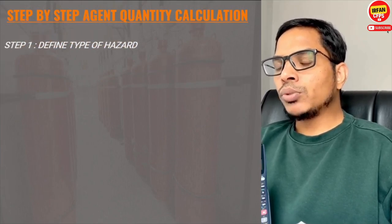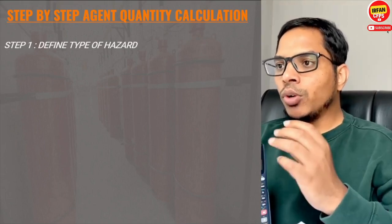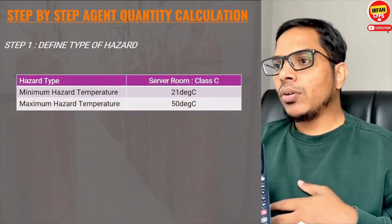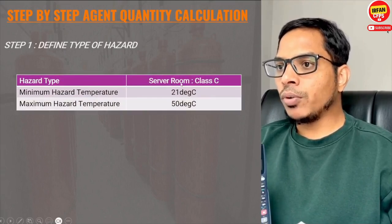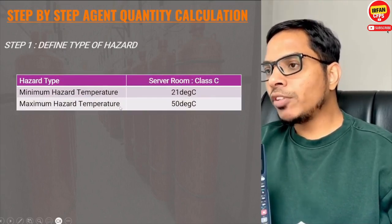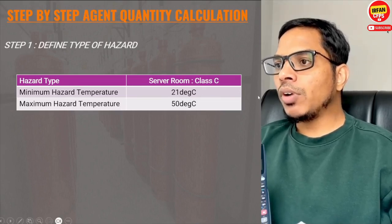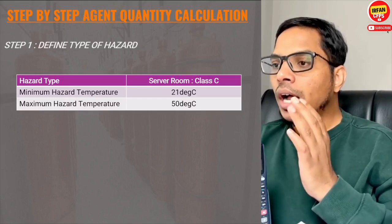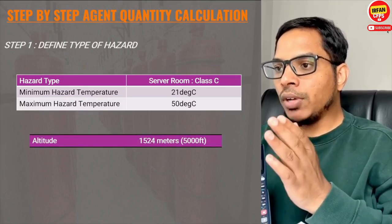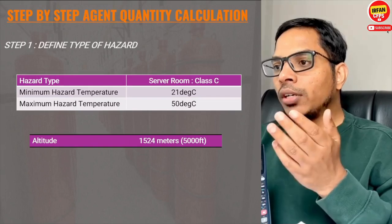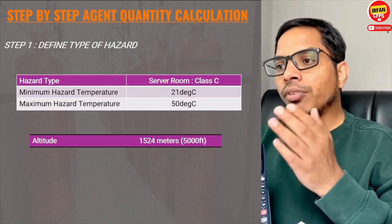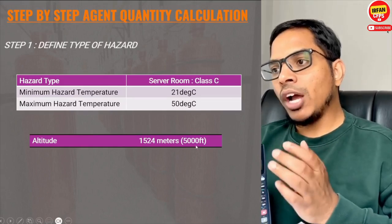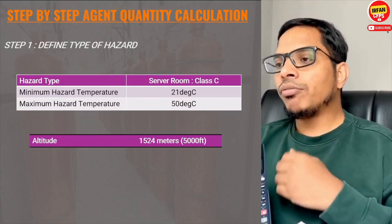The first step is to define the type of hazard. As per NFPA 2001, you have class A, class B, and class C hazards. A server room falls under class C hazard. We also need to know the minimum and maximum temperatures of that room — in our case, 21°C and 50°C. Additionally, we need to consider altitude, as FM 200 gas quantity varies based on altitude. In our case, the altitude is 5000 feet.